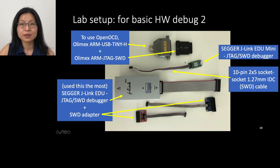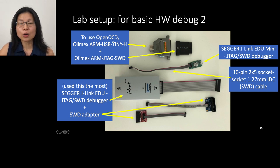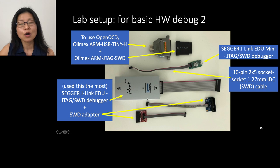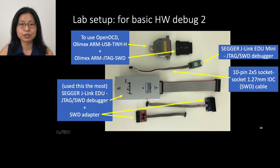Here are some hardware debuggers. The two upper ones are for OpenOCD, but using OpenOCD requires slightly more work than the Segger J-Link debugger. For beginners or hobbyists, I recommend the Segger J-Link. Hobbyists can use the education license, but for commercial use you need the commercial license.